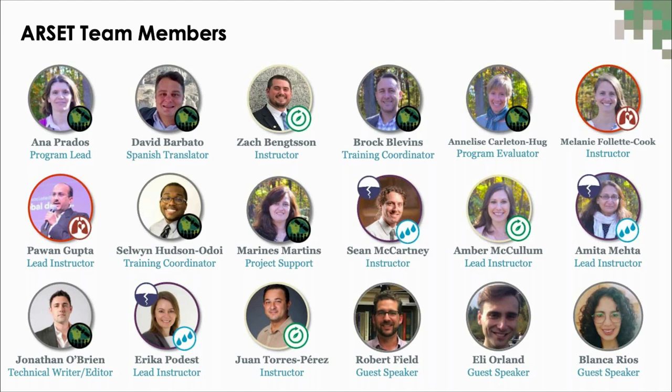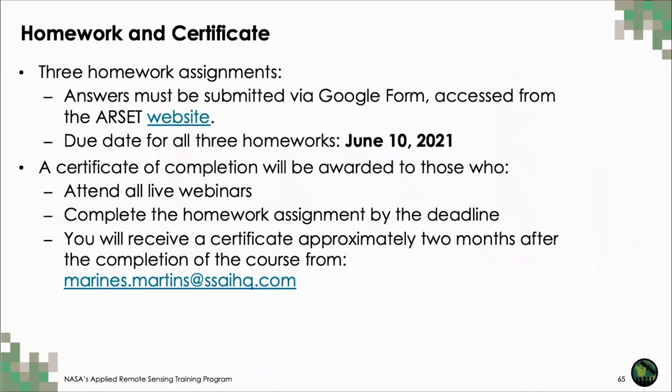That brings our six-part series on satellite observations and tools for fire risk detection and analysis to a close. A big thank you to the entire RSET team and our guest speakers for completing the longest and most collaborative RSET training series in the history of the program. There are three homework assignments — one each for pre, during, and post-fire sections — and for a certificate of completion you must submit these via Google Form, accessible from the training page on the RSET website. The due date for all three homework assignments is June 10th, two weeks from now.